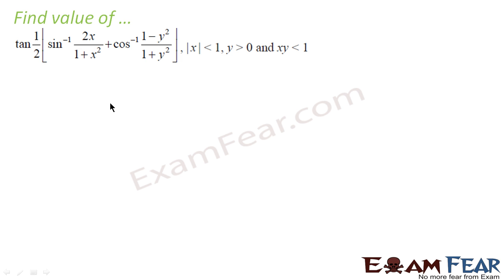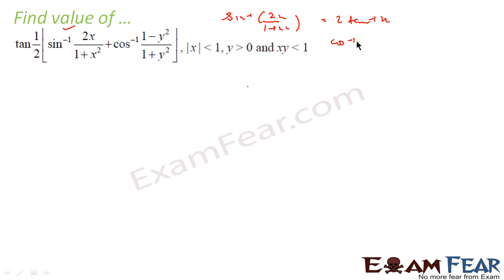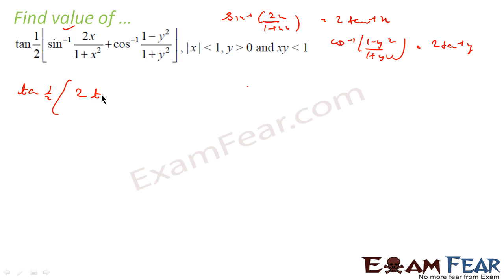Let us take one more example using known formulas. We know sin⁻¹(2x/(1+x²)) = 2·tan⁻¹(x), and we also know cos⁻¹((1-y²)/(1+y²)) = 2·tan⁻¹(y). So applying these formulas, the expression becomes (1/2)·(2·tan⁻¹x) + (1/2)·(2·tan⁻¹y), where the 2 and 1/2 cancel on both sides.